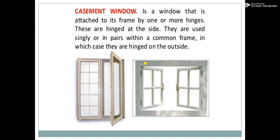The casement window is a window attached to its frame by one or more hinges; these are hinged at the side. They are used singly or in pairs within a common frame, in which case they are hinged on the outside. In this image of the casement window, the door is fixed to the window frame with the help of hinges, and it can be a single panel or a double-panelled window.